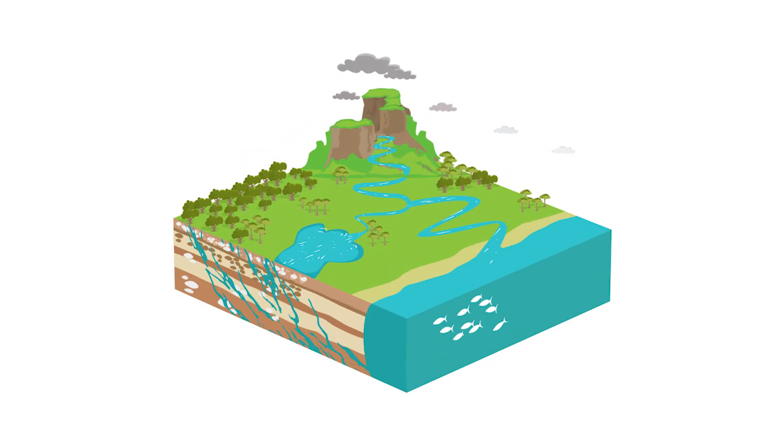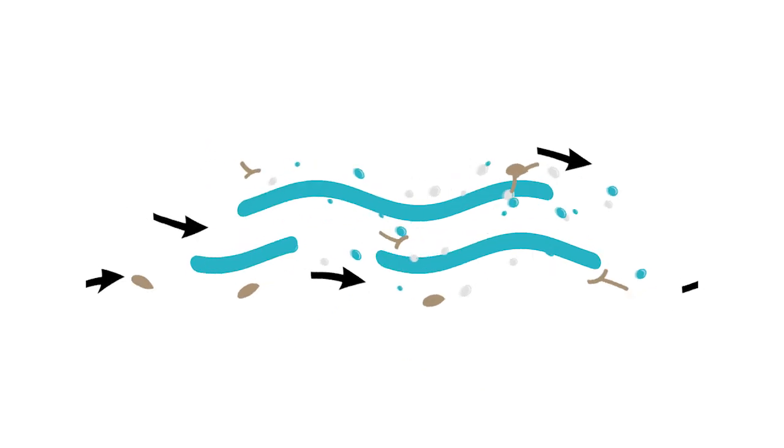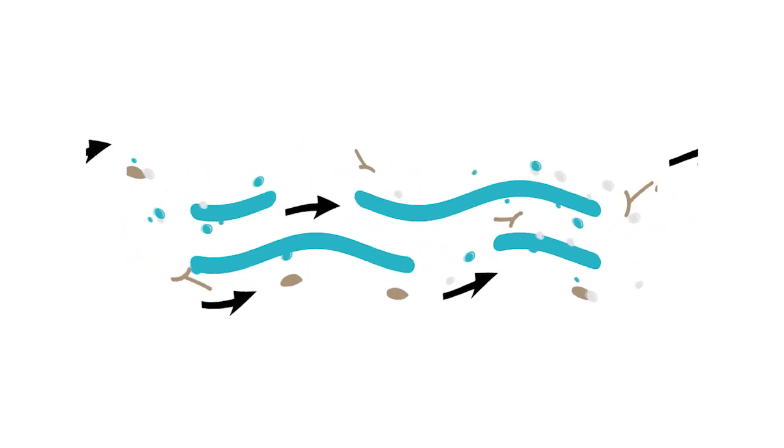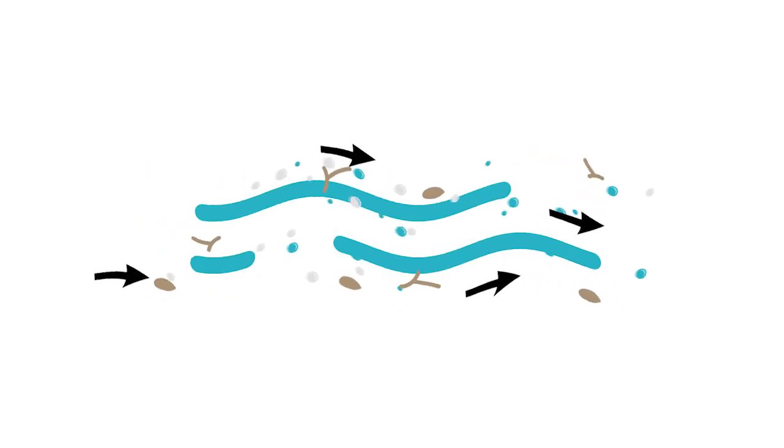Although you can't see it, water underground is also moving. It keeps flowing towards waterways. As water flows through a catchment area, it carries things with it. It can pick up solids like leaves and twigs and dissolve minerals from rocks and soil.